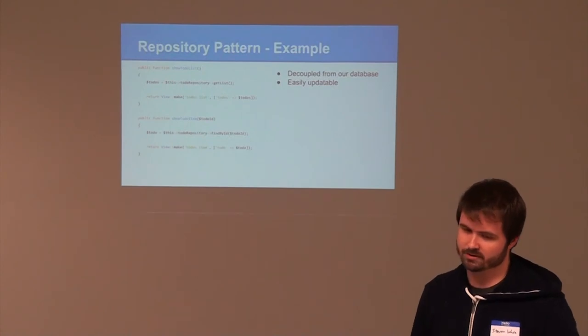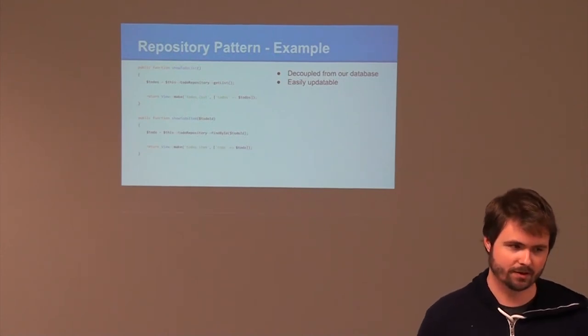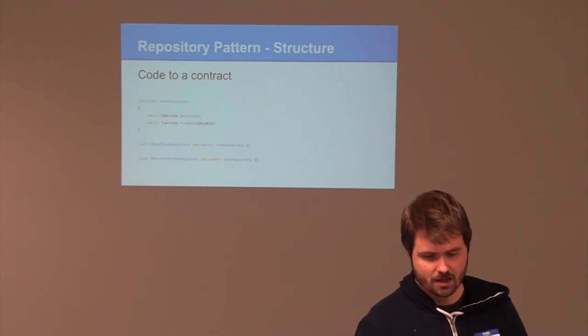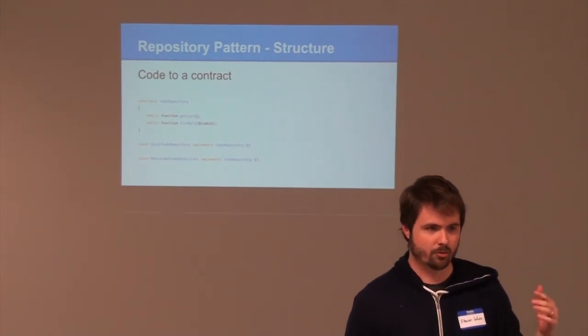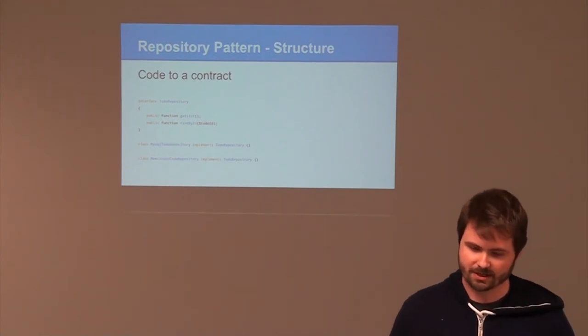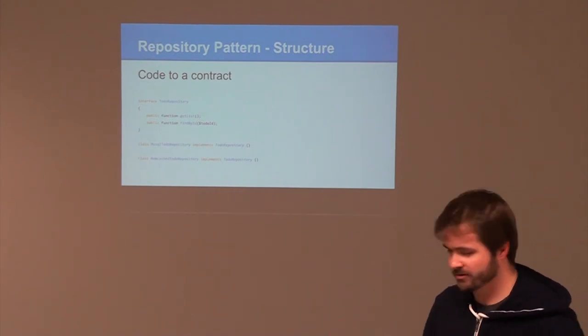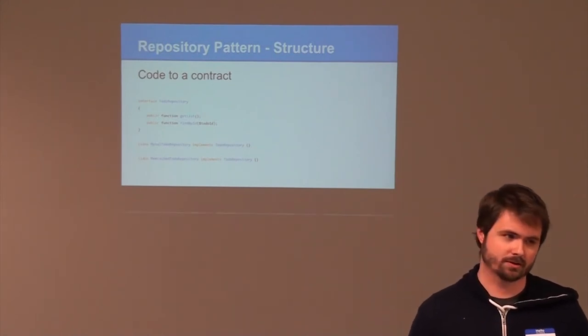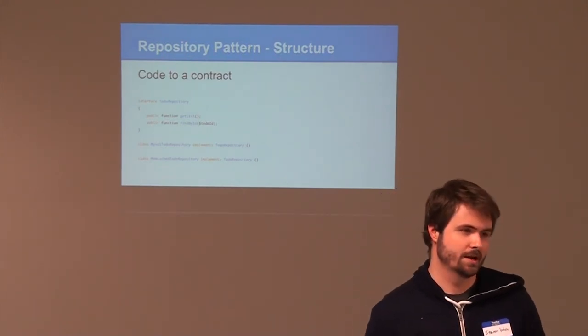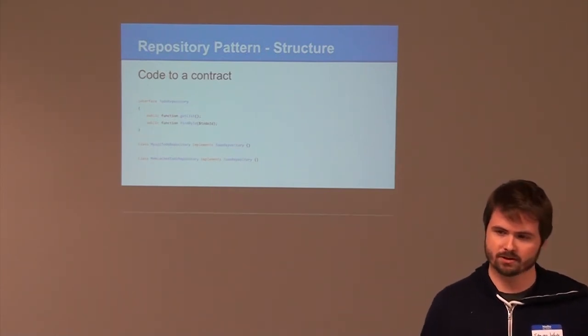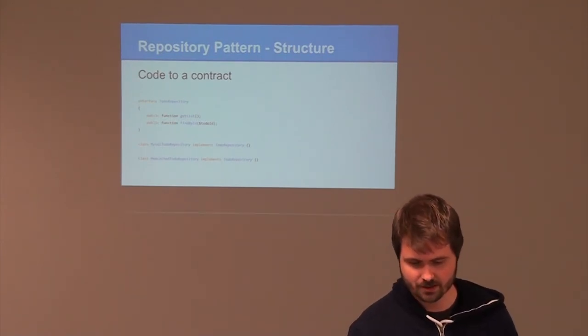So by moving that code to the repository, we then inside of any time we need it inside of our controller here, we just target the repository and then target the method that we need to retrieve the data. And again, following another one of the base solid principles here, is we're going to code to a contract. We create our repository as an interface with the methods that we need on it, which are get list and find by ID and anything else you may need. And you can see, again, immediately two implementations. There's MySQL to-do repository and Memcache to-do repository. And so as you use dependency injection and you type hint on to-do repository, you can always count on, no matter where you're getting it from the live data from the database or a cached version of it, you can still call the same method and still get the same results back. So you're abstracting that out and putting the logic within the implementation.